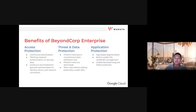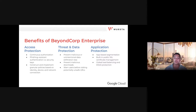BeyondCorp Enterprise also adds threat and data protection capabilities, built in partnership with Chrome. These capabilities block access to malicious content, prevent intentional exfiltration or accidental data loss, detect phishing, stop copying and pasting within the browser, and prevent malware transfers. They also generate alerts, logs, or reports of unsafe activity. Finally, app protection segregates users to provide access only to apps they need, preventing lateral movement across the network. Unlike a VPN, this solution does not grant blanket access to the network. BCE manages front-end SSL to ensure encryption for all Google Trust services.